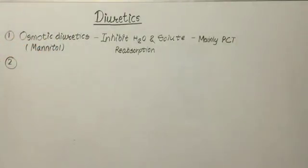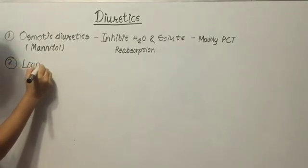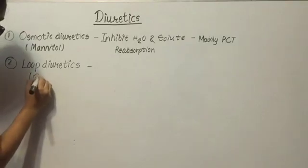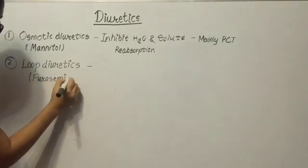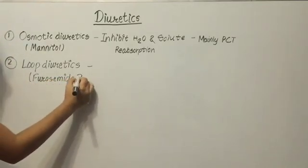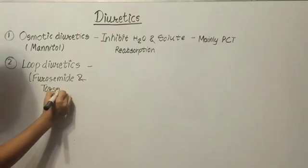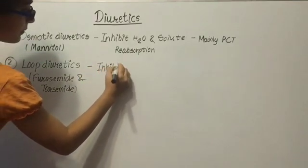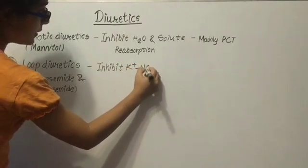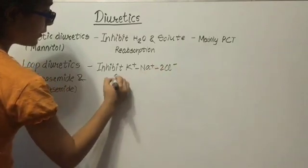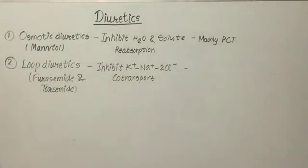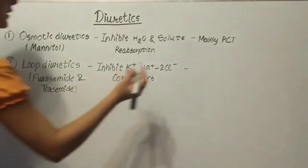Next group is loop diuretics. Drugs of loop diuretics like furosemide and torsemide. It inhibits sodium-potassium-chloride co-transport. And where does it act? It acts on the thick ascending loop of Henle.